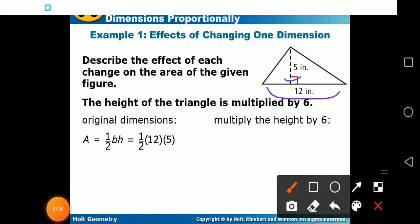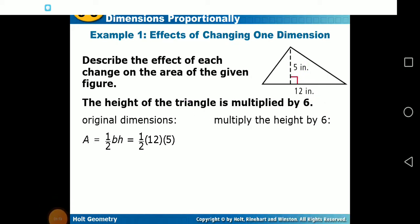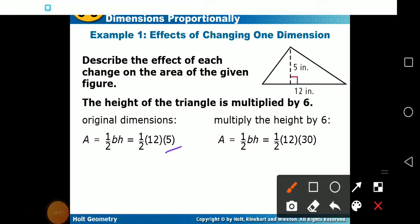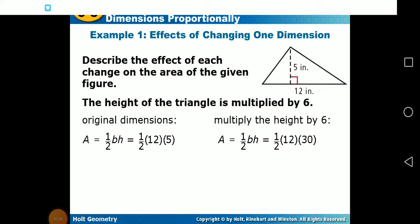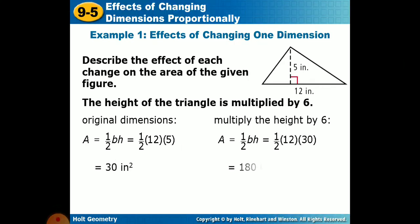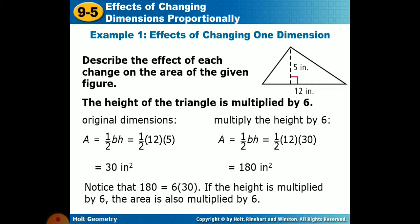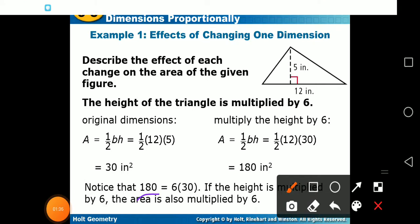The original area is half of 12 times 5, which is 30 square inches. When we multiply the height by 6, instead of 5 it becomes 30, so the new area is half of 12 times 30, giving 180 square inches. The area changed by a factor of 6, since 6 times 30 equals 180.